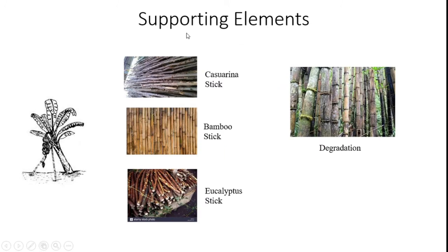Farmers need supporting elements to support banana stems against natural disasters. For this reason, they are currently utilizing casserole sticks, bamboo sticks, and eucalyptus sticks. However, these also get affected by the degradation properties of biological matter.